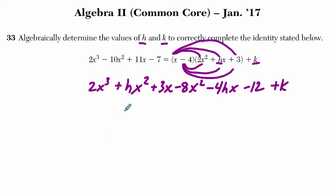If I simplify this down a little bit or rearrange it, I get 2x cubed, and then I want to put my x squareds together. I am going to put the negative 8x squared first, and then plus hx squared. Then I have my x terms, plus 3x, this term right here, and minus 4hx there, that's an h, and then minus 12 plus k.